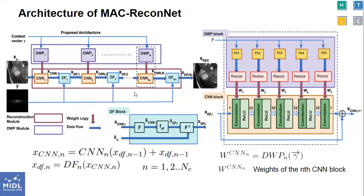The architecture of MacReconNet is a cascaded architecture. The reconstruction module at the bottom is a cascade of N_T CNN blocks with residual connections and K-space data consistency units in an alternating manner. There are N_C DWP blocks, and each DWP block learns the weights of its respective CNN. Each CNN has five convolution layers with non-linear activations. During training, the loss calculated between the predicted reconstructed image and the fully sampled target image is backpropagated to learn the weights of the DWP block, while the weights of the MR reconstruction network are not made directly learnable. As a result, the weights of the DWP module are conditioned on not only the context vector but also the image domain loss.